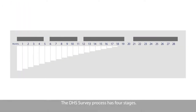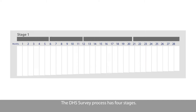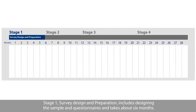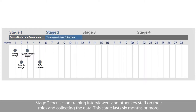The DHS survey process has four stages. Stage 1, Survey Design and Preparation, includes designing the sample and questionnaires and takes about six months. Stage 2 focuses on training interviewers and other key staff on their roles and collecting the data. This stage lasts six months or more.